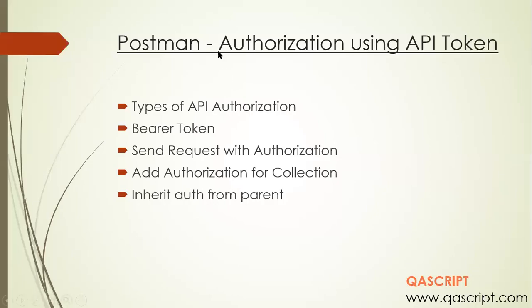Hey guys, welcome back. This time we are going to look at one of the most common topics in any API automation course. Whenever you are working with an API you need authorization, because not every API is open in the market. Most APIs have some kind of authorization through which you can access them. It may be an API key, an OAuth key, a token, or a personal access token — there are so many kinds of authorization keys.